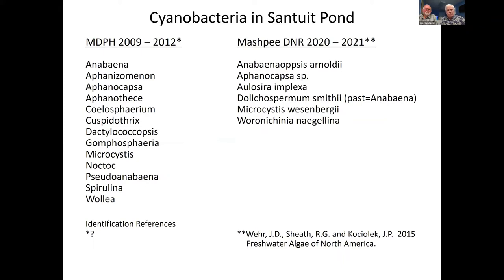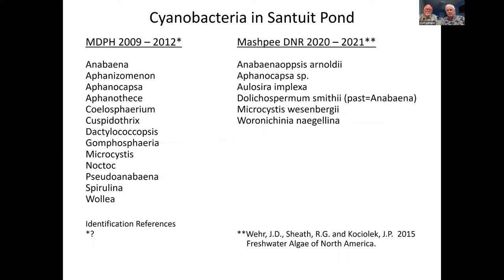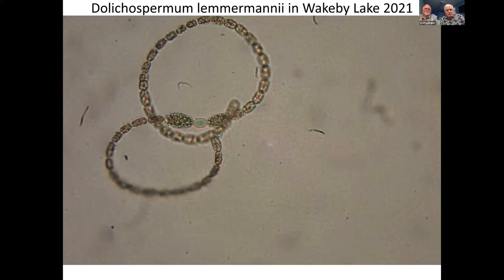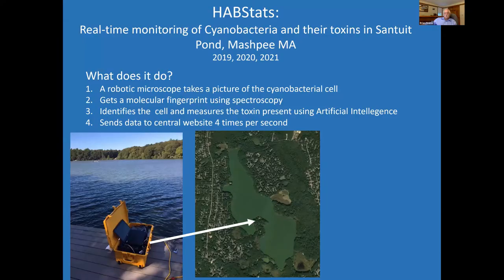This year we had a bloom in Mashpee Wakeby, primarily Wakeby Lake, with another kind of cyanobacteria called Dolichospermum lemmermannii, which makes a number of different toxins including paralytic shellfish poison toxins. We've been analyzing but haven't detected those other toxins yet. Things are getting worse overall.